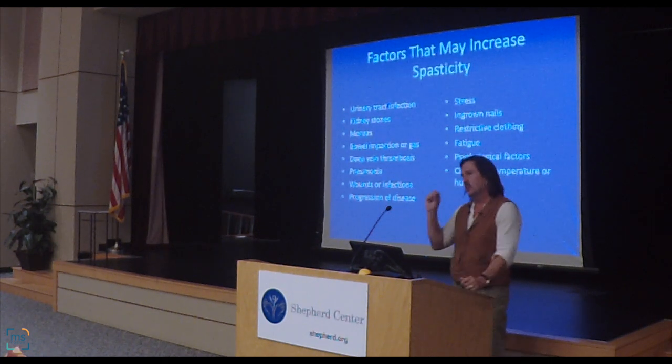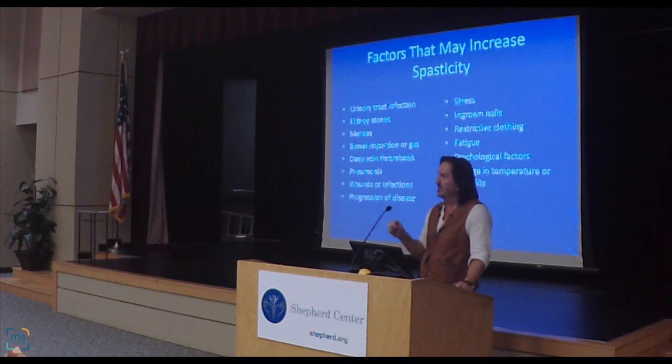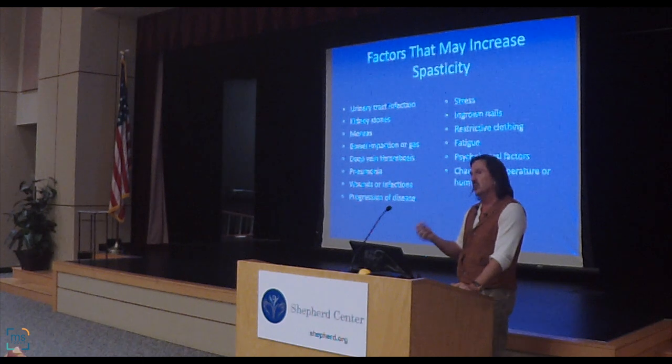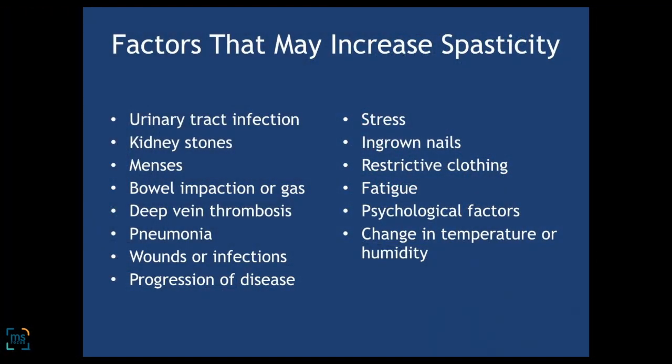Spasticity can be very stimulus-responsive. If you do something that irritates your body, your spasticity can get worse — just about anything can be a potential noxious stimulus. Some of the big ones we see are urinary tract infections, kidney stones, upper respiratory infections, pneumonias. Something like a poor seating position in a wheelchair, a brace that doesn't fit well, a shoe that doesn't fit well, a sock that's irritating — any of these things can worsen spasticity. Constipation will do it for a lot of people.